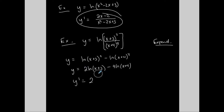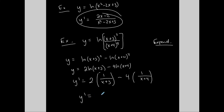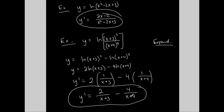Now finding the derivative: the 2 stays, times the derivative of ln of (x plus 3). The derivative of a natural log is u prime over u, so we need the derivative of (x plus 3), which is 1, divided by (x plus 3). Minus 4 times the derivative of that natural log: derivative of (x plus 4) is 1, divided by (x plus 4). The 2 goes into the numerator over (x plus 3), minus the 4 goes into the numerator over (x plus 4). We cannot cancel these 4s because it's a sum on the bottom. If we want to leave it as separate fractions, we're done.